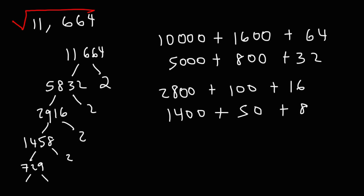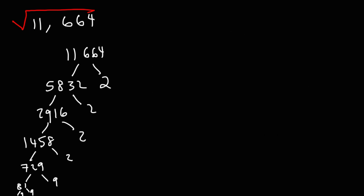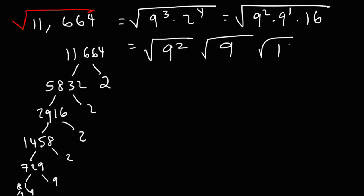Now 729 is 9 to the third power. So you can divide it by 9 and you'll get 81. And then 81 is, I'm running out of space, 9 times 9. So we have a total of three 9s. So we could say 9 to the third. And we have four 2s. So I'm going to write this as 9 squared times 9 to the first power. And 2 to the fourth power, we can just make that equal to 16.